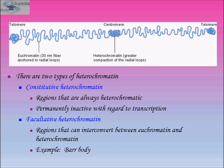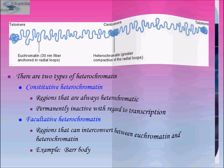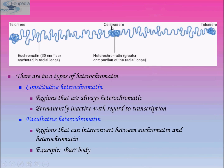Heterochromatin has been associated with the di- and trimethylation of H3K9 in certain portions of the genome. Note that acetylation means removal of the acetyl group and methylation means addition of the methyl group. Euchromatin is a 30 nanometer fiber anchored in a radial loop, and heterochromatin is a greater compaction of the radial loop.